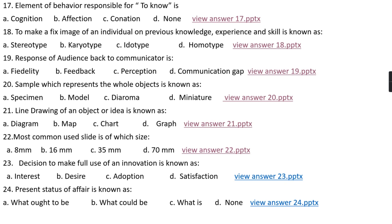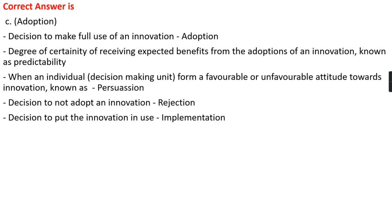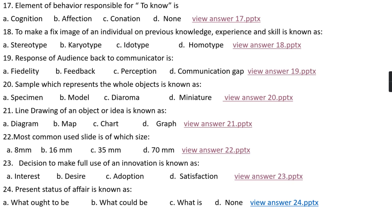Question number twenty-three: Decision to make full use of an innovation is called adoption. The degree of certainty of receiving expected benefit from the adoption of that innovation is known as predictability. When an individual forms a favorable or unfavorable attitude toward the innovation, that is known as persuasion. Decision to not adopt an innovation is known as rejection. Decision to put an innovation in use is known as implementation.